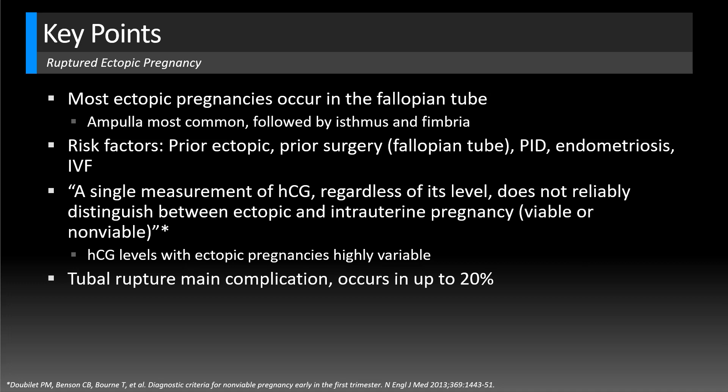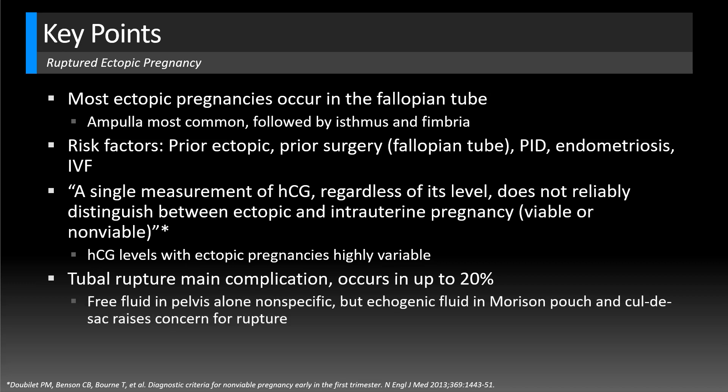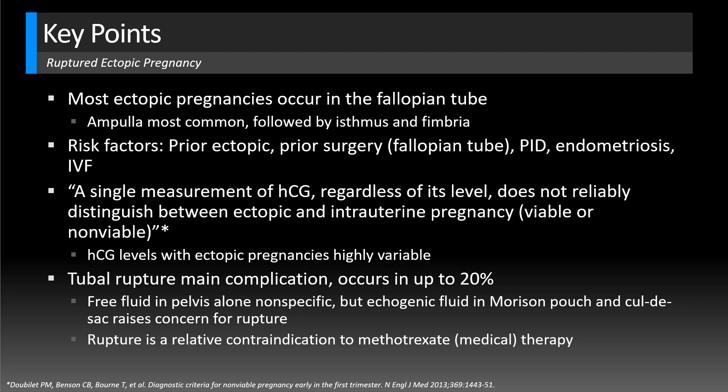Tubal rupture is the main complication of ectopic pregnancy, occurring in up to 20% of patients, and HCG levels don't really help predict that either. Free fluid in the pelvis alone is not very specific, but echogenic fluid in Morrison's pouch and in the cul-de-sac in a patient with ectopic pregnancy raises concern for rupture. It's important to identify rupture because those patients may be more unstable with lower hematocrit levels, and rupture is also a relative contraindication to methotrexate, which is medical therapy.